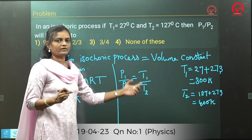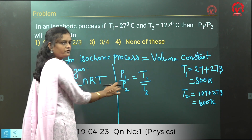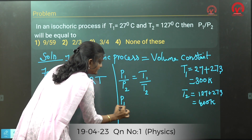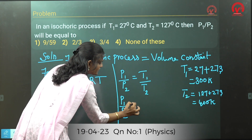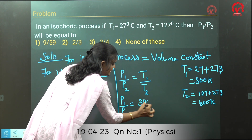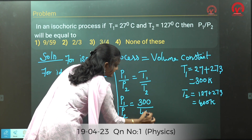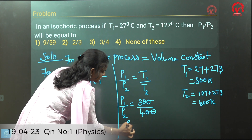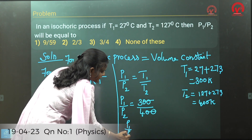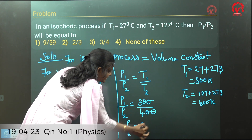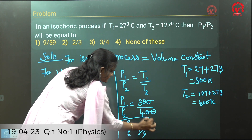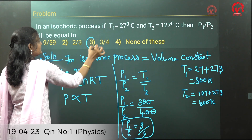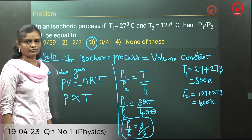Now we have T1 = 300 K and T2 = 400 K. So P1/P2 = 300/400. Cancelling the zeros, P1/P2 = 3/4. So the answer is 3 divided by 4.